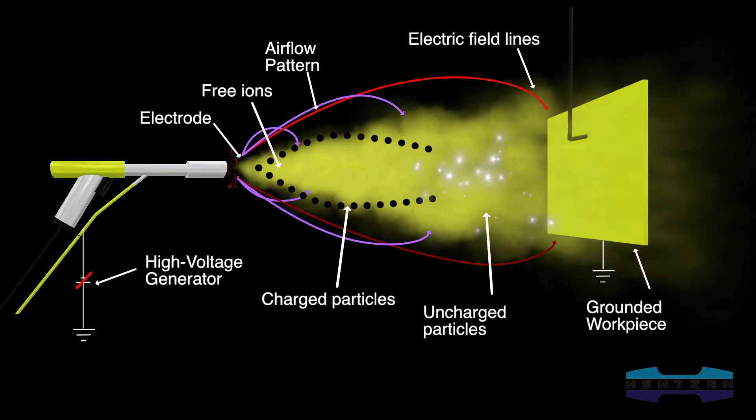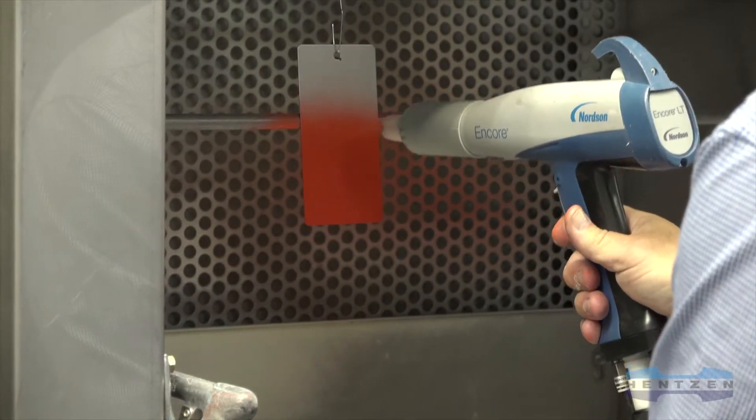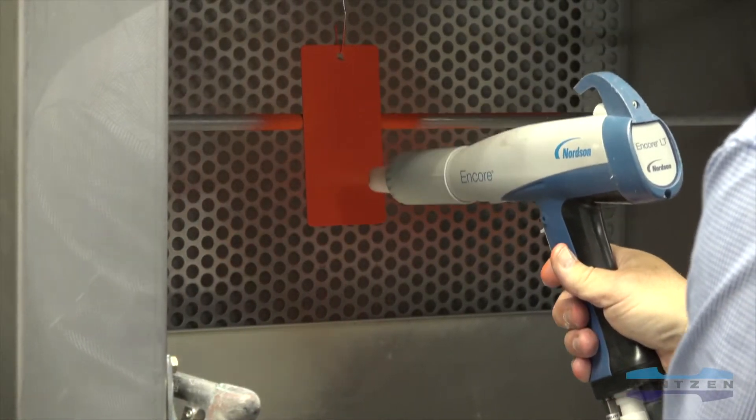The space charge creates its own electric field which interacts with the field of the high voltage electrode and assists in the powder particles deposition onto the grounded surface.